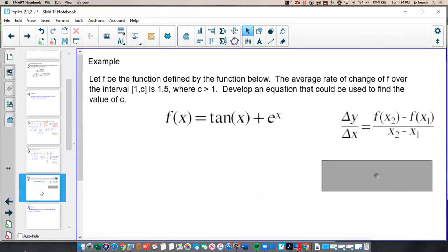For a third example, let f be the function defined by the function below. So this function here, tangent of x plus e to the x, the average rate of change of f over the interval from 1 to c is 1.5. So they're giving me the average rate of change, but they're not giving me all the information about the interval they normally would. So I need to develop an equation that could be used to find the value of c.